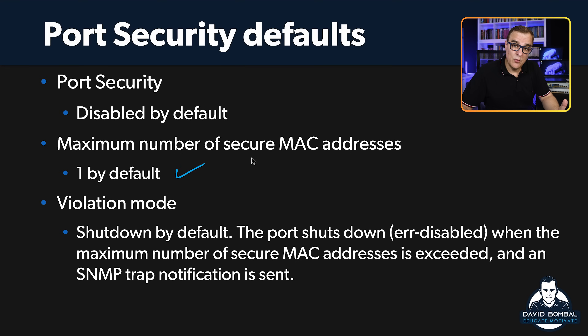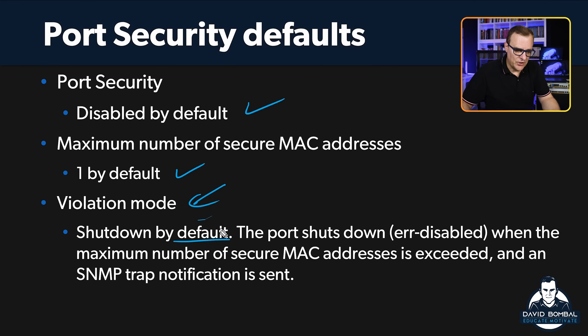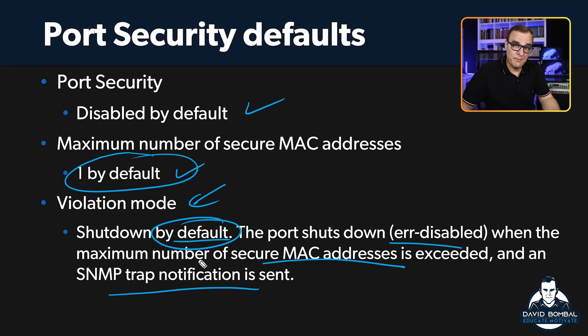These are the defaults: by default, only one MAC address is permitted; port security is disabled by default; and the violation mode is shutdown. There are three violation modes: shutdown — where the port is shut down on violation; restrict — where you get notifications; and protect — which gives no notifications such as SNMP traps. Shutdown is the default, putting the port into error-disabled state. With restrict, you get an SNMP trap notification when something happens.